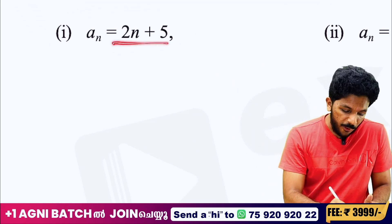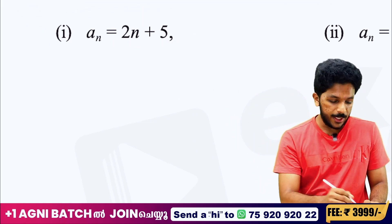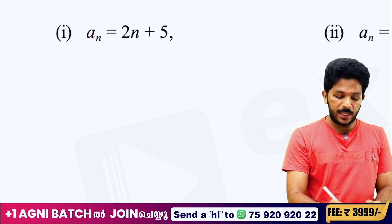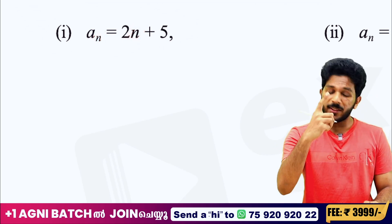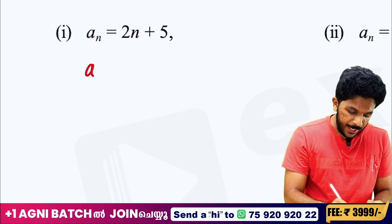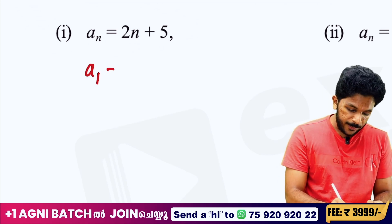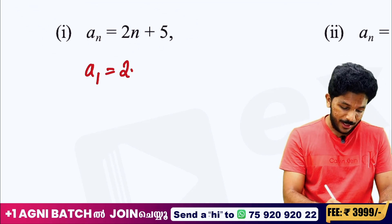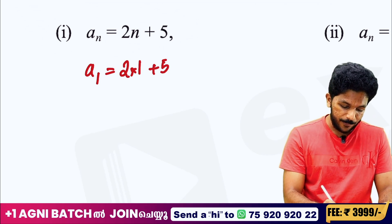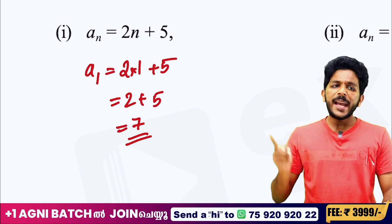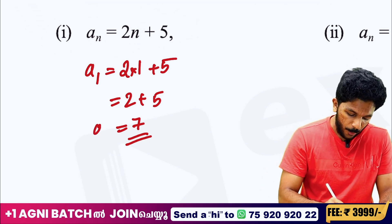The nth term is the formula. For example, if I put n here — if I put n=1, then I get the first term a1. I will say 2 into 1 plus 5, so 2 plus 5 is 7. This is the first term.